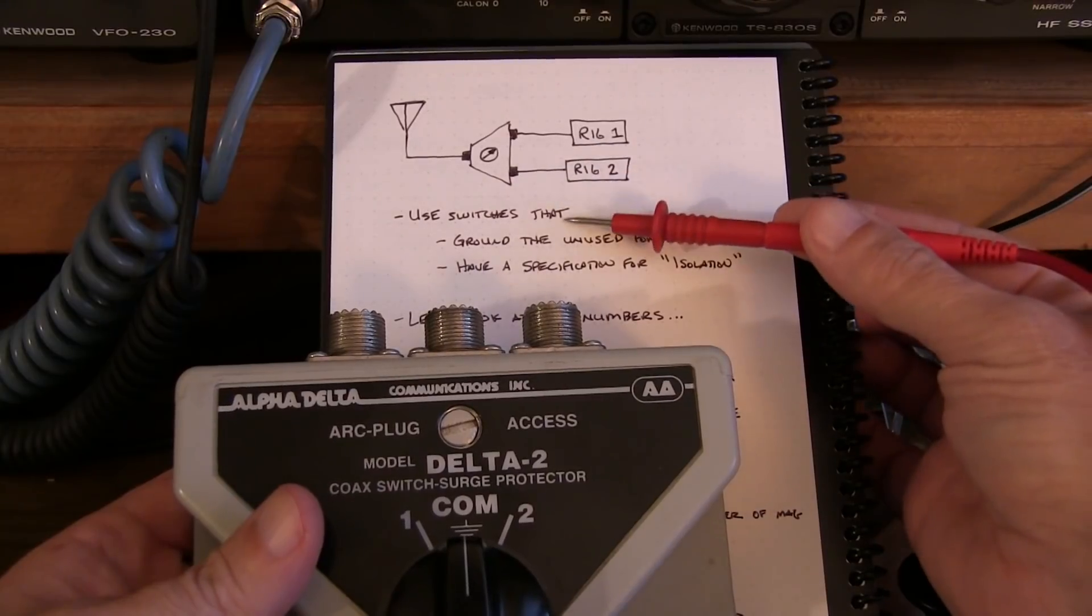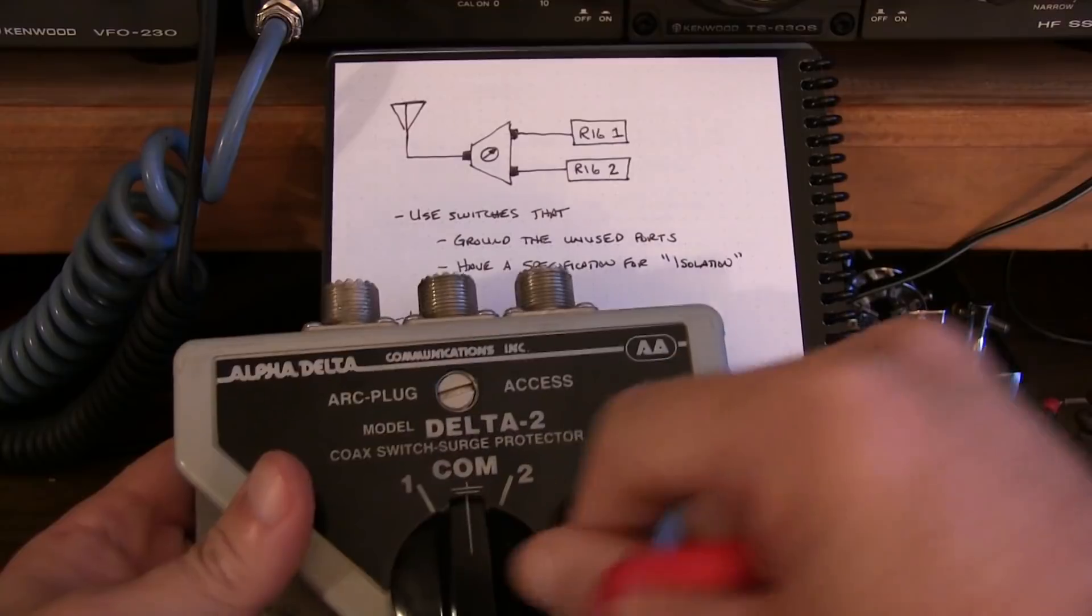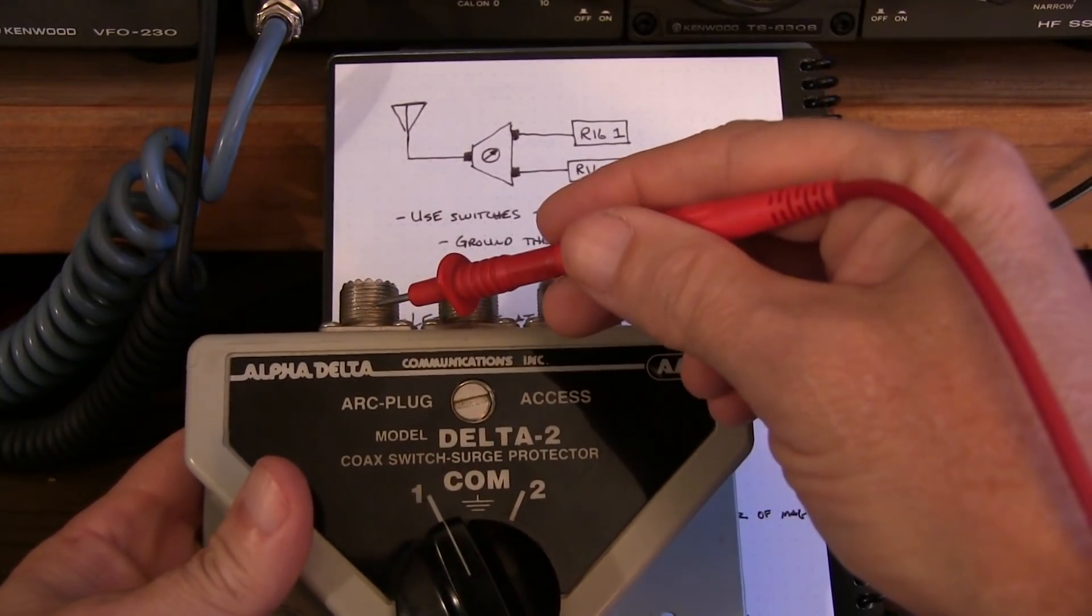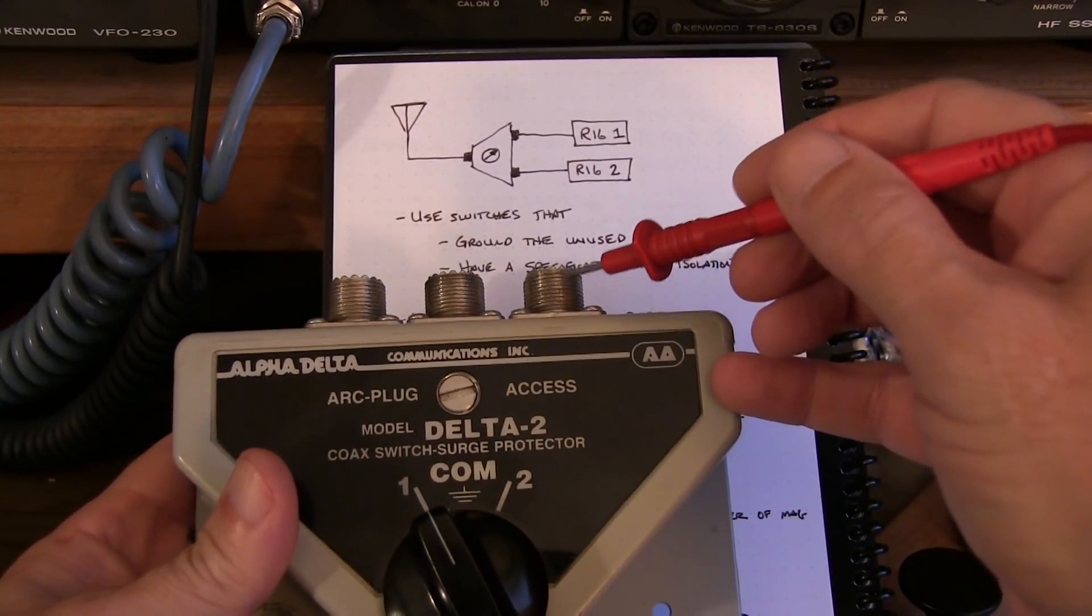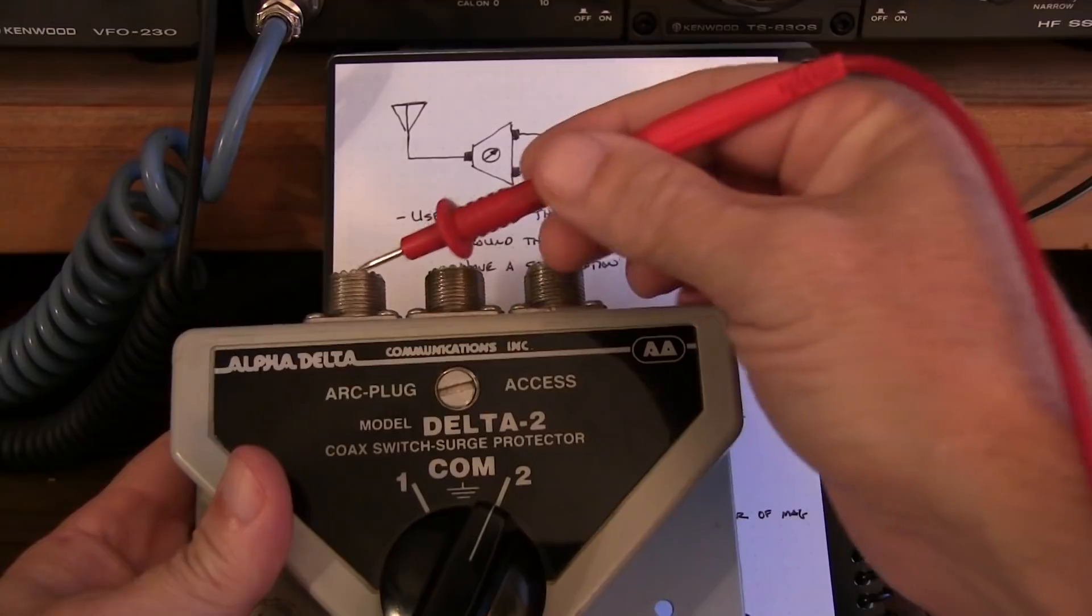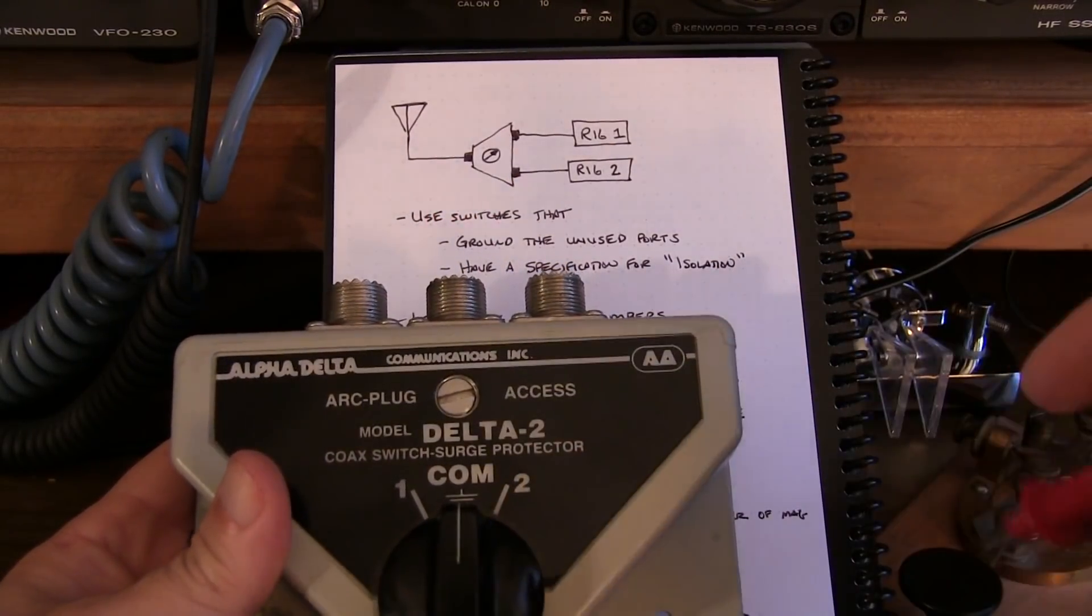Now the majority of these switches will switch the unused port to ground. So if I switch this to one, it's going to connect my common to port number one, but then port number two is going to be shorted to ground, and vice versa when I switch this to position two, this port is switched to ground.